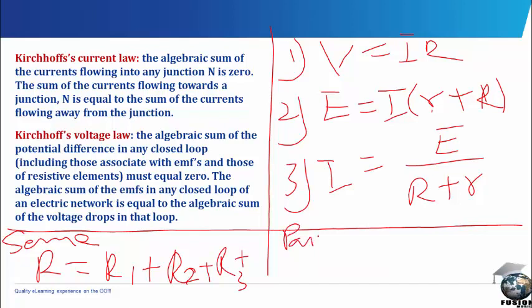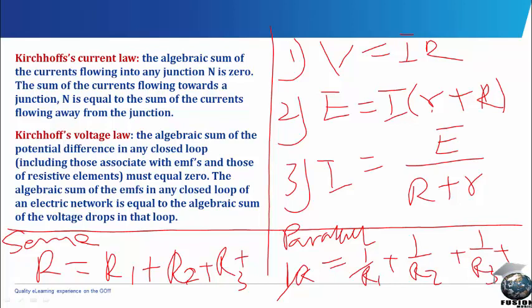While in parallel arrangement, we have 1 over R to be equal to 1 over R1 plus 1 over R2 plus 1 over R3 plus, in that manner. So we said the inverse of equivalence in parallel is the summation of the individual inverse resistance that we have.